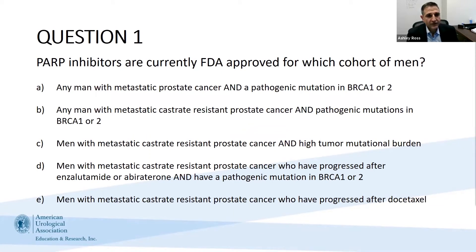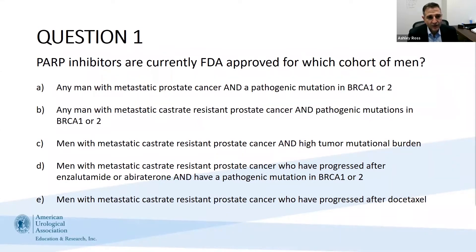Question one: PARP inhibitors are currently FDA approved for which cohort of men? Options include: A, any man with metastatic prostate cancer and a pathogenic mutation in BRCA1 or 2; B, any men with metastatic castrate-resistant prostate cancer and a pathogenic mutation in BRCA1 or 2; C, men with castrate-resistant prostate cancer and a high tumor mutational burden; D, men with metastatic castrate-resistant prostate cancer who have progressed after enzalutamide and abiraterone treatment and have a pathogenic mutation in BRCA1 or 2; or E, men with metastatic castrate-resistant prostate cancer who have progressed after docetaxel.